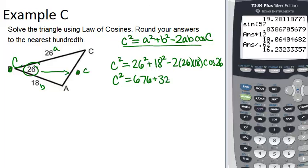18 squared is 324, and 2 times 26 times 18 is 936. So we're on our way to simplifying this. Next, you should add these up, which is 1,000, and then figure out the cosine of 26 in the calculator and multiply it by 936.